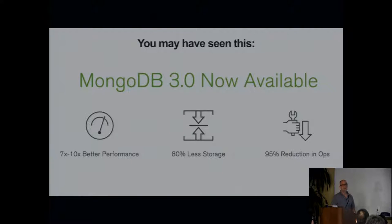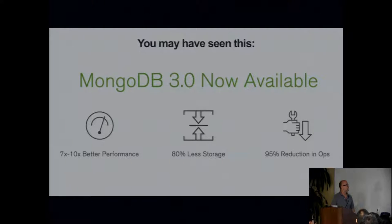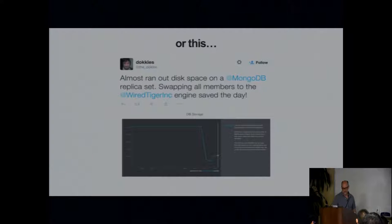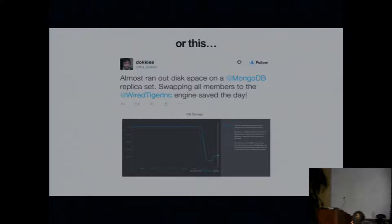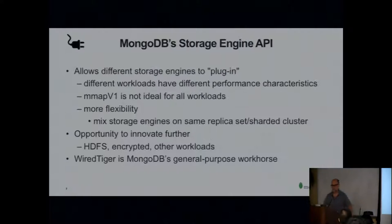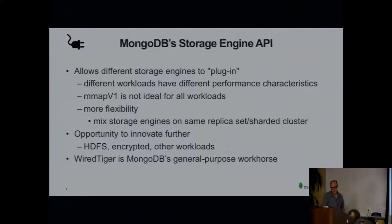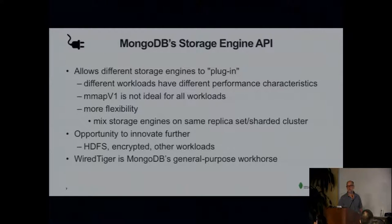MongoDB acquired WiredTiger about a year ago now. The announcement cited 7 to 10x better performance than the engine they had before, and 80% less storage than the engine they had before — all from WiredTiger coming into their release. We also saw a real-world example: someone almost ran out of disk space on a replica set; swapping all members to the WiredTiger engine saved the day. That's compression kicking in. I'm going to talk about MongoDB's storage engine because it gives a good sample of how WiredTiger fits into a complex application.